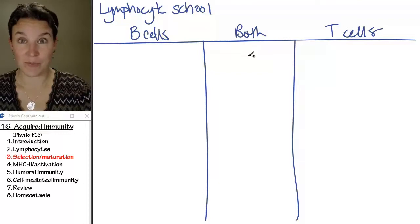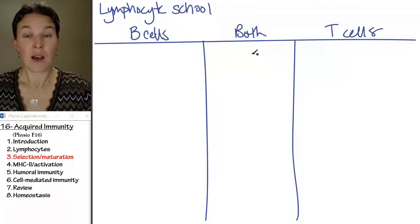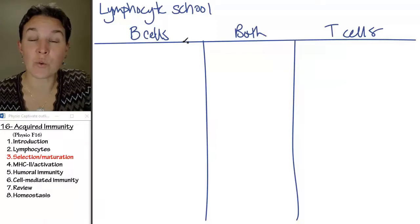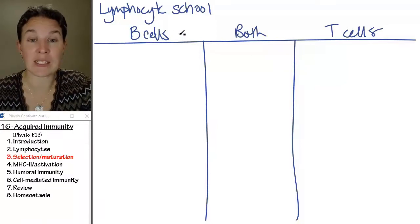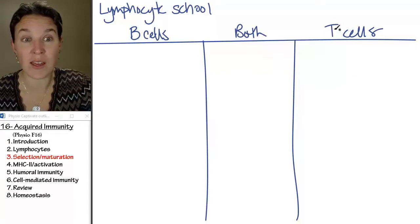Everybody is going to school, and their schools happen in different places. The B cells are going to school in the bone marrow, and the T cells are going to school in the thymus.